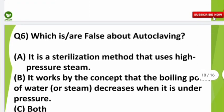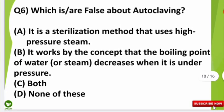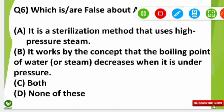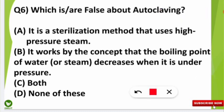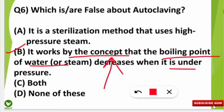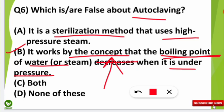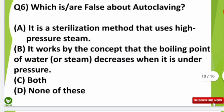The sixth question asked which statement is false about the autoclaving process. The false statement is option B — autoclaving works on the concept that the boiling point of water or steam increases when under pressure. As pressure increases, the boiling point also increases, not decreases. The correct statement is that autoclaving is a sterilization method that uses high-pressure steam.